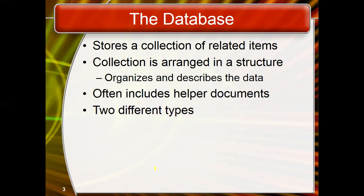We store or input all related information — all the information should be related with each other, all the fields should be related with each other, and all the records should be related with each other. For example, the university stores the data of the first semester of a student in a database, so all the data of the students will be related in that database. A record presents the information of a single student, so it will be related to that student only, not to other students. The database stores data in some related form.